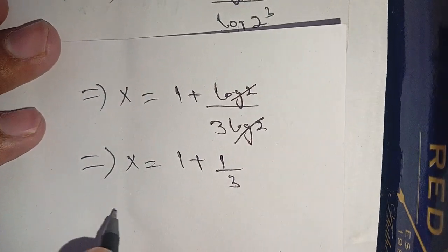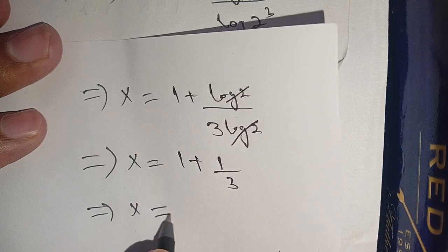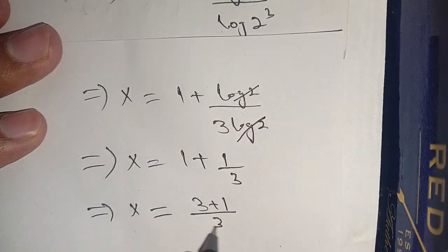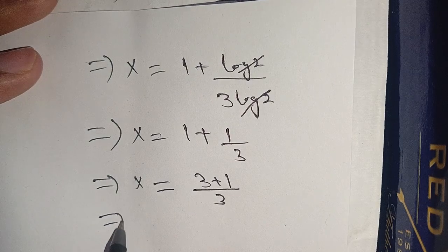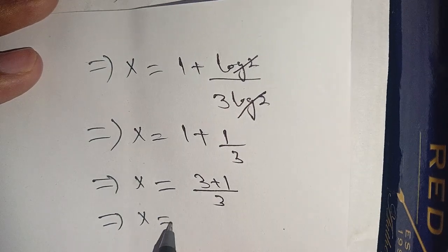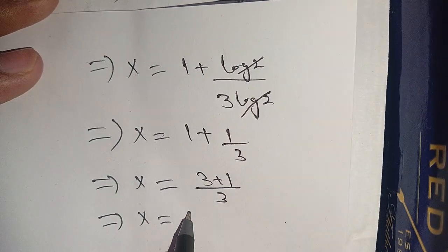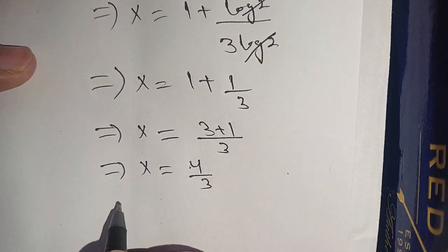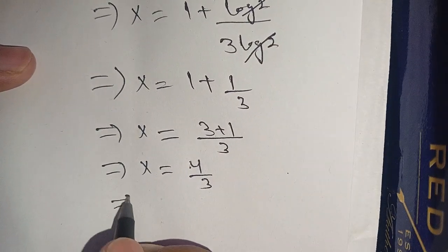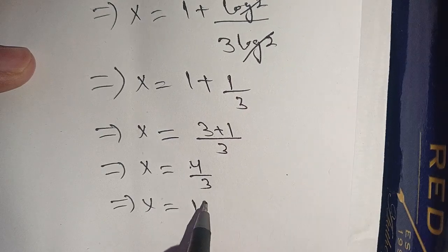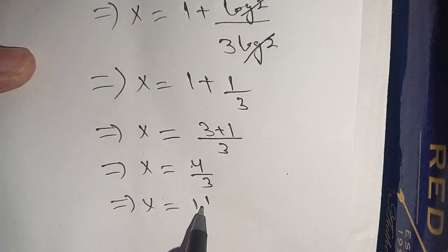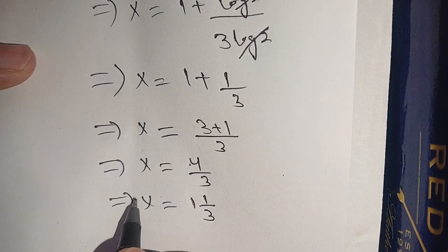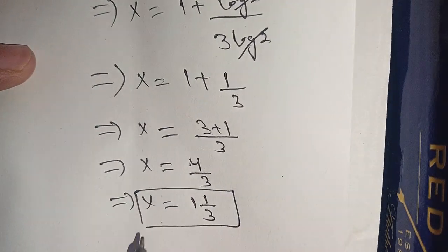Now we can write x is equal to 1 plus 1 divided by 3, which gives us 3 plus 1 divided by 3, so x is equal to 4 divided by 3. This is our required value of x.